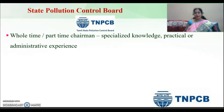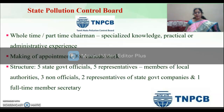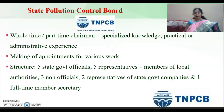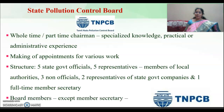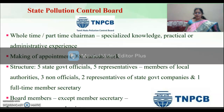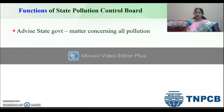The State Pollution Control Board also has a whole-time as well as part-time chairman with specialized knowledge, practical and administrative experience, who appoints all other personnel. The structure comprises five state governmental officials, five representative members for local authorities, three non-officials, two representatives from state government companies, and one full-time member secretary. The board members can hold office for three years.